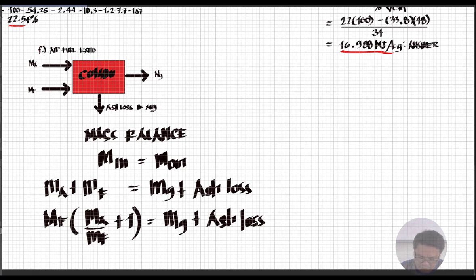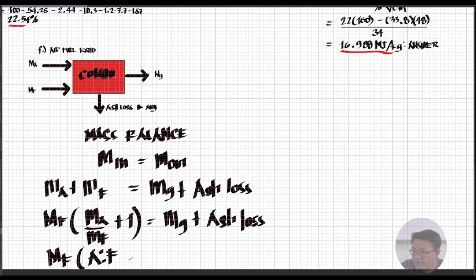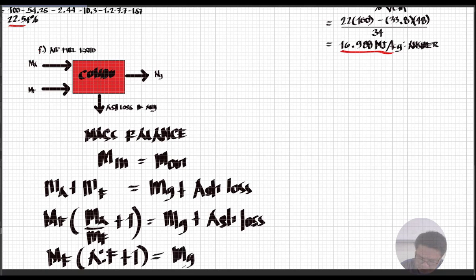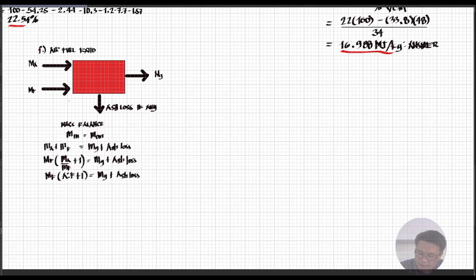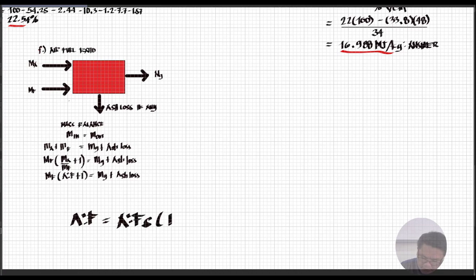This is now in the form of air-fuel ratio — the ratio of mass of air to mass of fuel. We can write: mass of fuel multiplied by the air-fuel ratio plus one equals mass of flue gas plus ash loss. The actual air-fuel ratio is equal to the stoichiometric air-fuel ratio times one plus excess air.